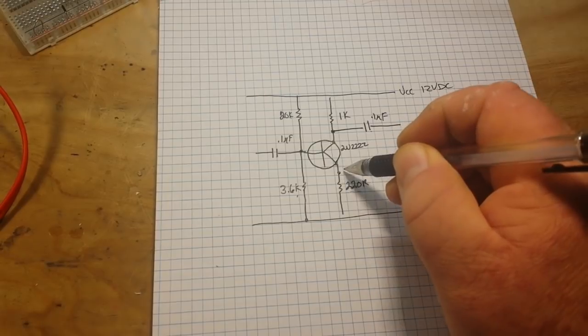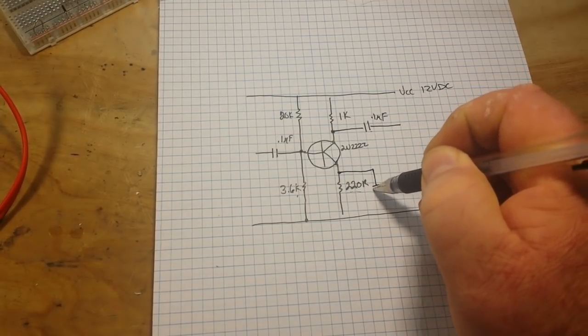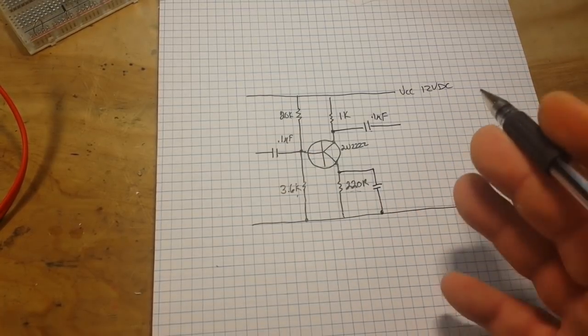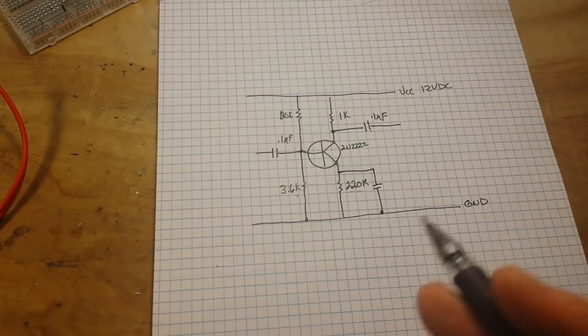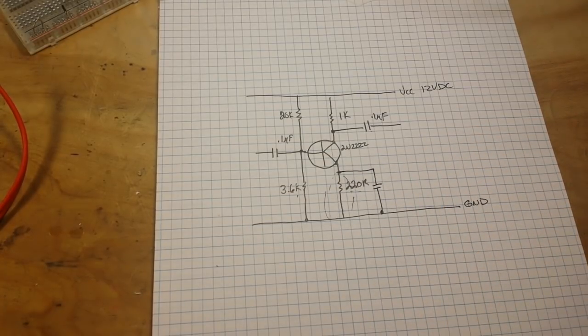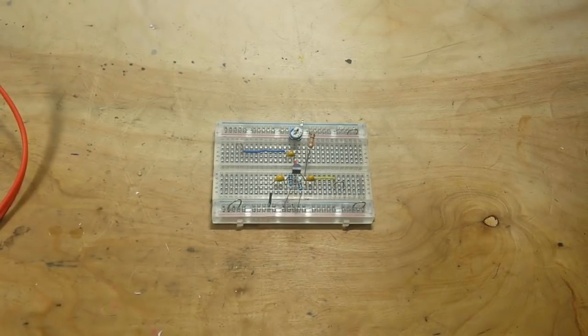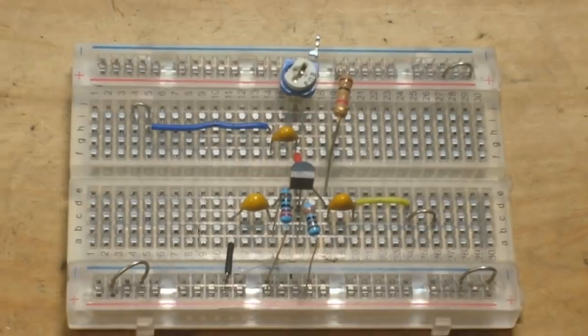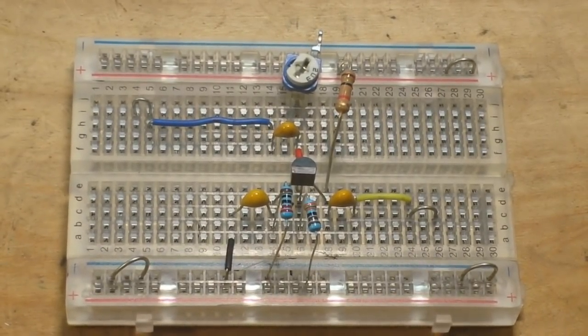And finally we're going to add one more capacitor here. That's going to do a couple things - it's going to bypass any hum which you can get from your mains if you're driving this off a power supply, and it's going to help keep this thermal runaway from happening. So there's our circuit, pretty simple. This is a class A amplifier which means it is on all the time, which means number one it is the most linear type of amplifier, which is good for audio, but number two it is the least efficient type of amplifier.